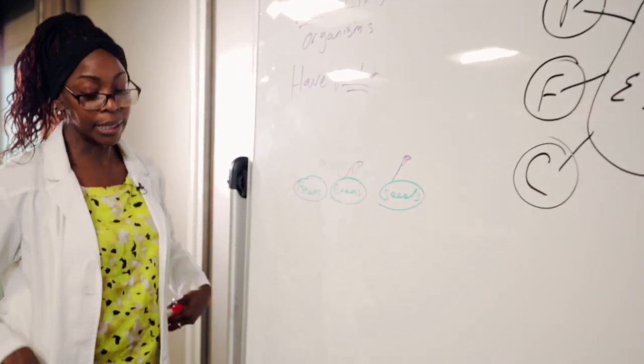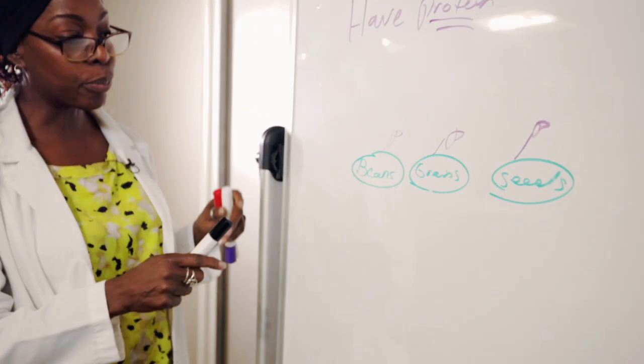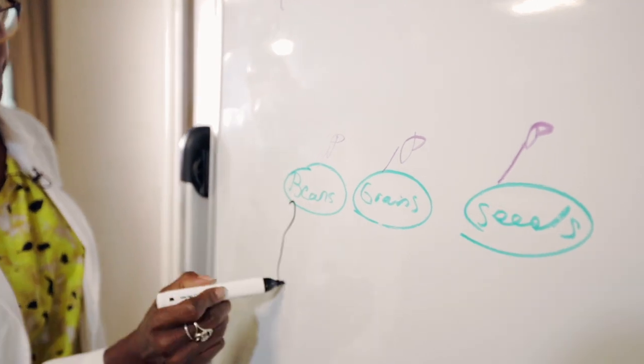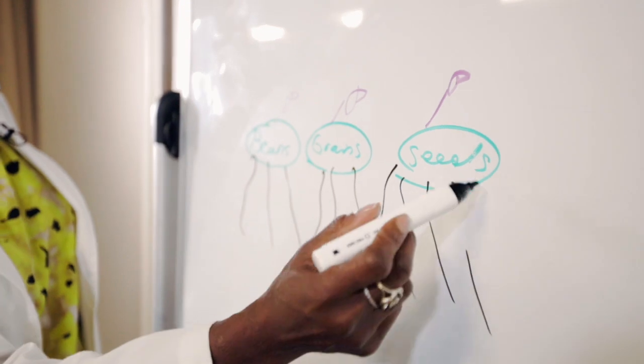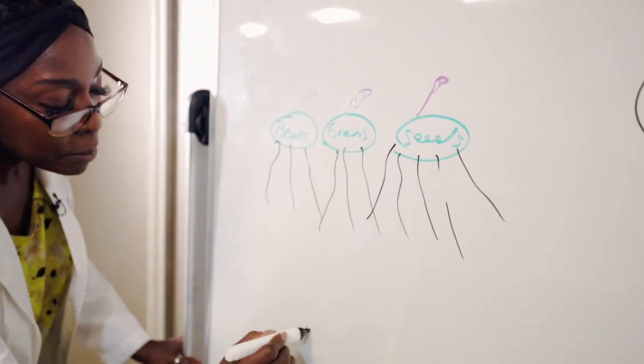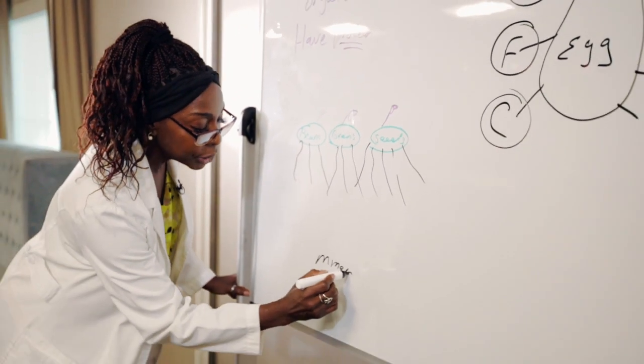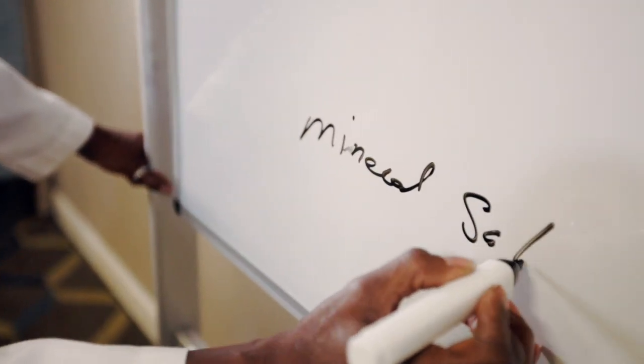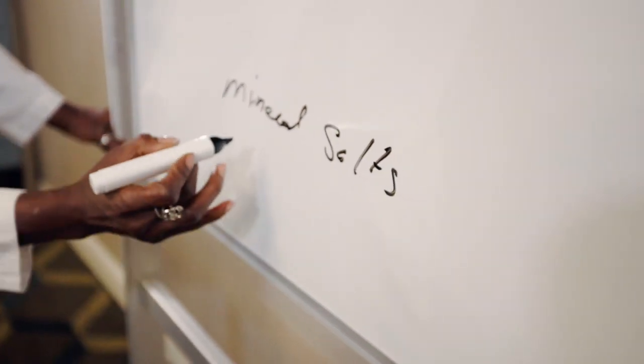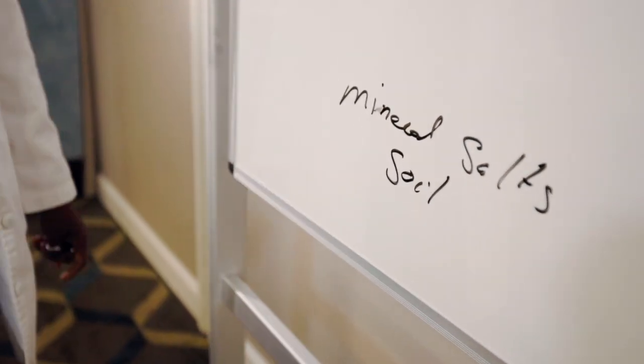The nice thing about these eggs, the plant eggs, is that when they sprout into the ground, when their roots grow into the ground, they pick up minerals. Minerals are salts. And they're in the soil. Minerals come from the soil.